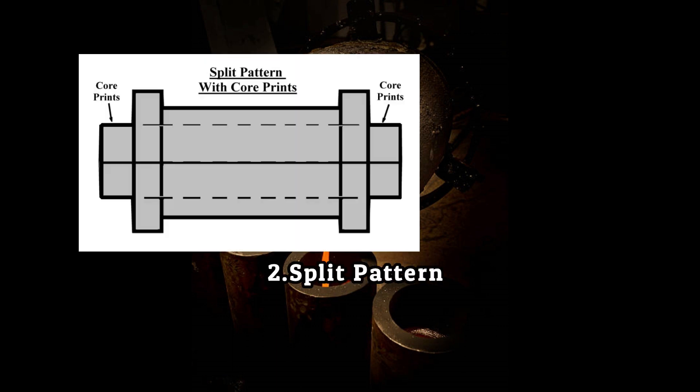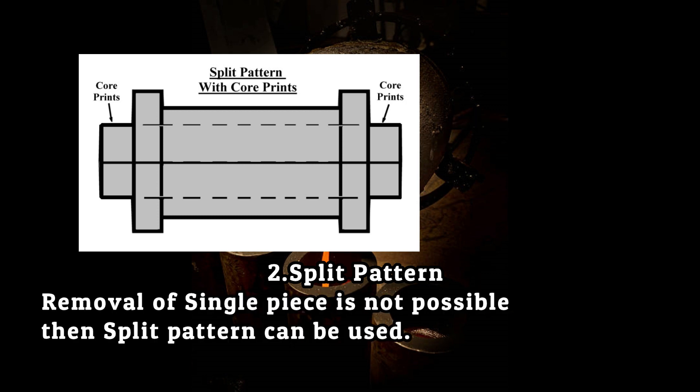Second is split pattern or multi-piece pattern. These patterns are made into two or more pieces. The first half of the pattern is placed into the cope and the other half into the drag. It is used for complex objects where removal of a single piece pattern from the mold is impossible.